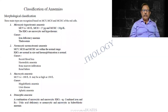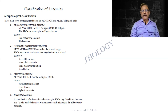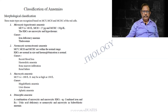If you are a clever student, you will also include the morphological classification — it can be macrocytic, normocytic, or microcytic. But this alone is not enough; you will have to write the previous etiological classification, which is of paramount importance. Please trace this in your text.